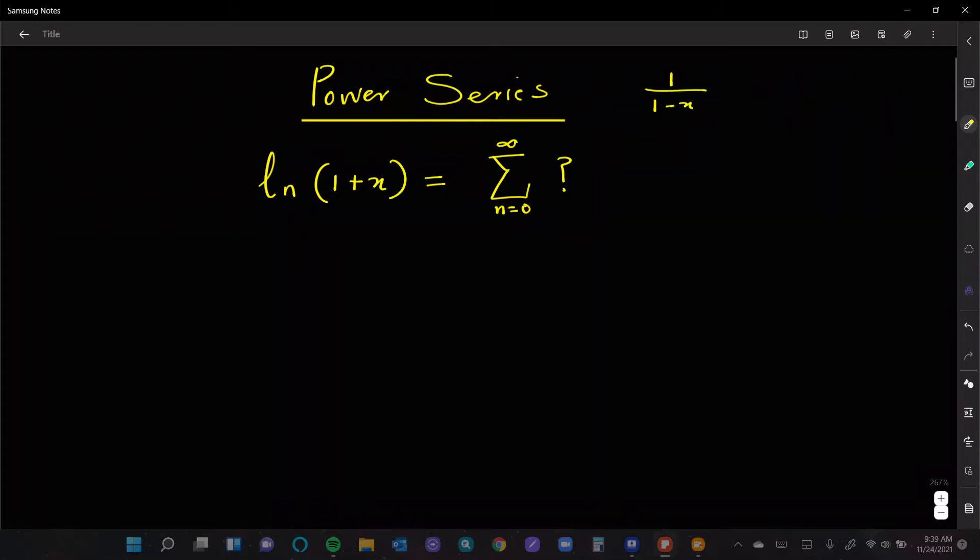Remember that the basis, the key to power series, is basically believing that if you have 1 over 1 minus x as a rational expression, you could actually write this out as 1 plus x plus x squared plus x cubed, and keep going plus x to the n.